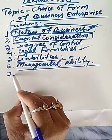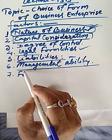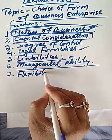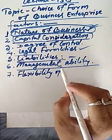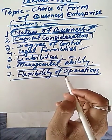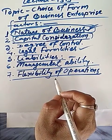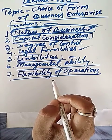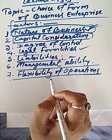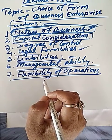The seventh factor is flexibility of operations. Businesses which require a high degree of flexibility should prefer sole proprietorship or partnership firm, whereas making changes and taking decisions takes a long time in company form of business.